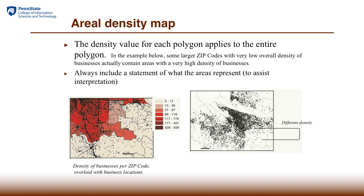For area density maps, another alternative is to show the density value as shades of colors. In some cases this may be a better solution, because some audiences may tend to interpret the dots as real locations, which they are not. To avoid that misinterpretation, color-coded density might work better. The other advantage of color-coded density is that you can show the real locations as points while simultaneously showing the density as a color-coded area map, combining count, actual location, and density all in one map.